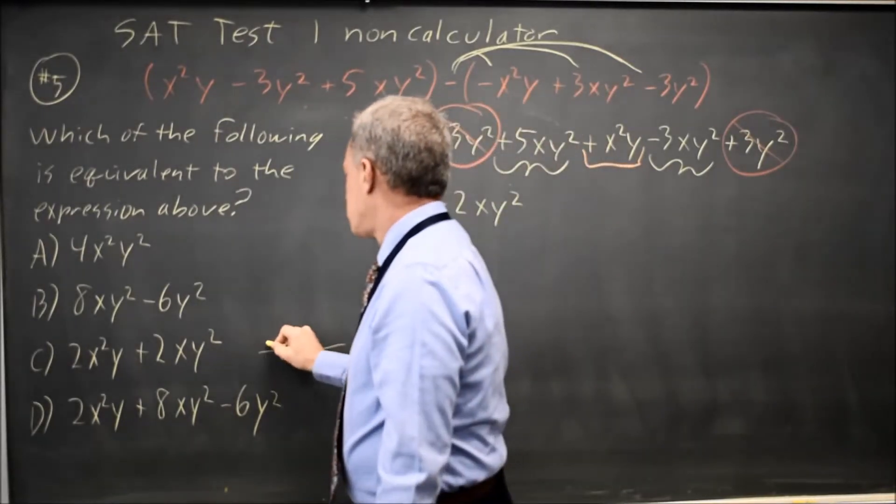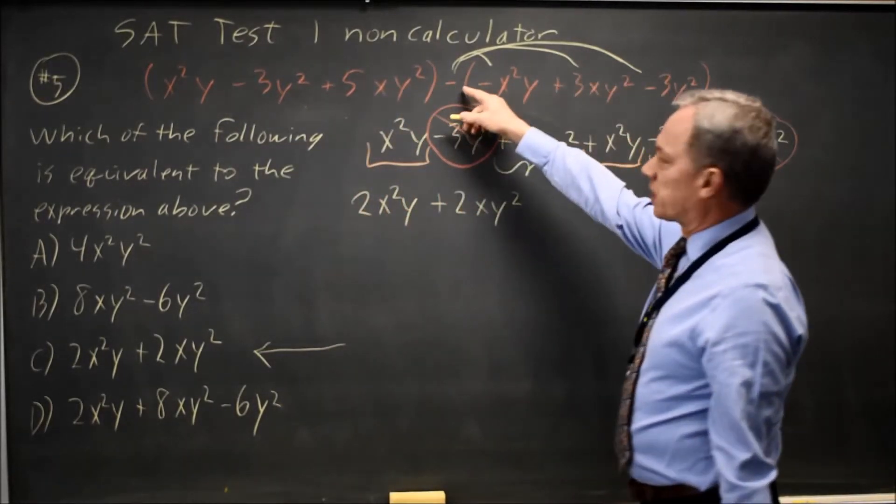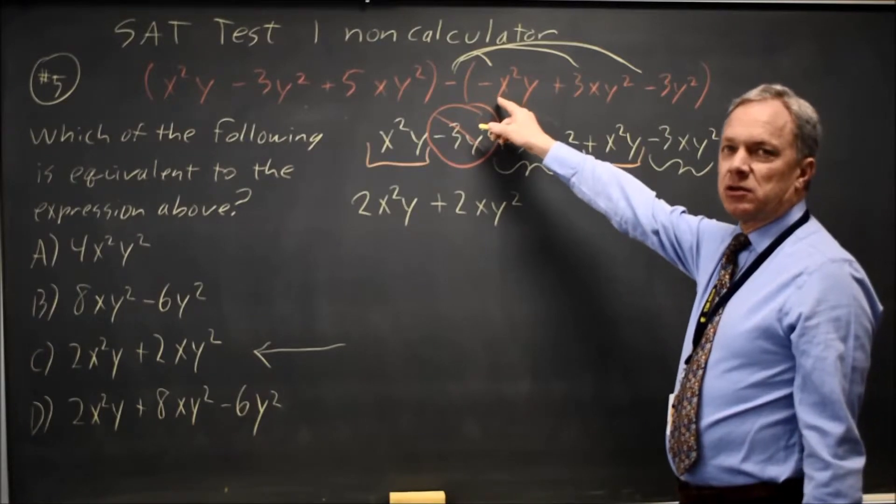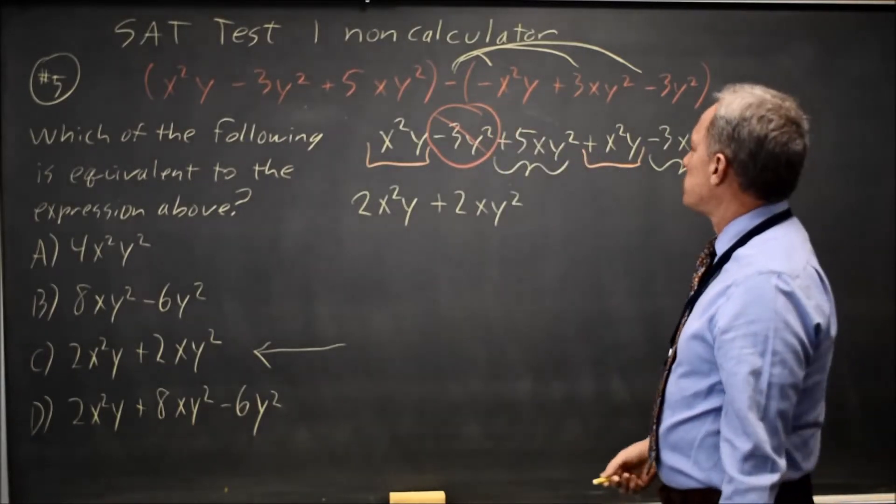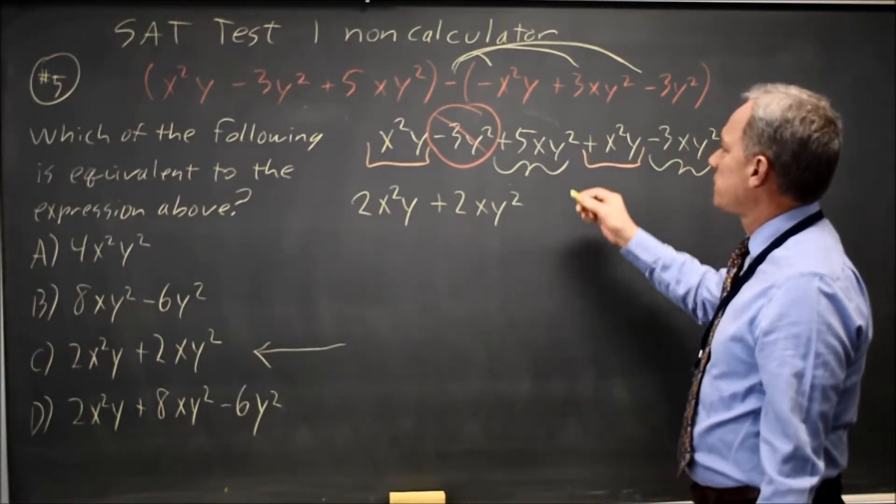Simplified, that matches choice C. I'll check that I distributed correctly without dropping the negative, which is my most common error, and it's common for a lot of people.